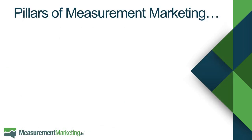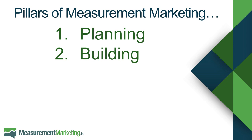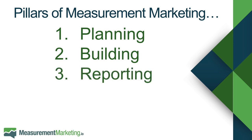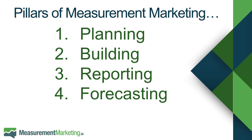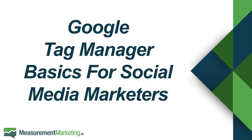Let's start with the pillars of measurement marketing. First is planning — figuring out what's important to measure, what behaviors are happening on your site, and what questions you'll ask of your data to make better marketing decisions. Once you have that, you'll build out your measurement system using tools like Google Tag Manager. Then you can pull reports from Google Analytics or Facebook Analytics, forecast your near future results, and measure against those forecasts to know where to optimize.